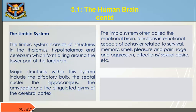The limbic system consists of structures in the thalamus, hypothalamus, and cerebrum which form a ring around the lower part of the forebrain. Major structures within this system include the olfactory bulb, the septal nuclei, the hippocampus, and the cingulate gyrus of the cerebral cortex. The limbic system, often called the emotional brain, functions in emotional aspects of behavior related to survival, memory, smell, pleasure and pain, rage and aggression, affection, sexual desire, and so on.